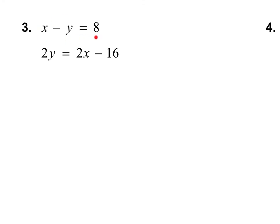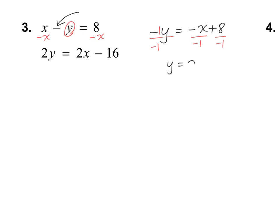Let's look at number 3. We need to get y by itself in both equations. For the top equation, moving x over leaves negative y = −x + 8. Dividing by negative 1 gives y = x − 8. For the second equation, divide out the 2 to solve for y. I'll have you finish this problem on your own — simplify the second equation, then decide if the slopes are the same or different, if the y-intercepts are the same or different, and whether it's parallel with no solution or the same line with infinite solutions. Pause the video and finish number 3.